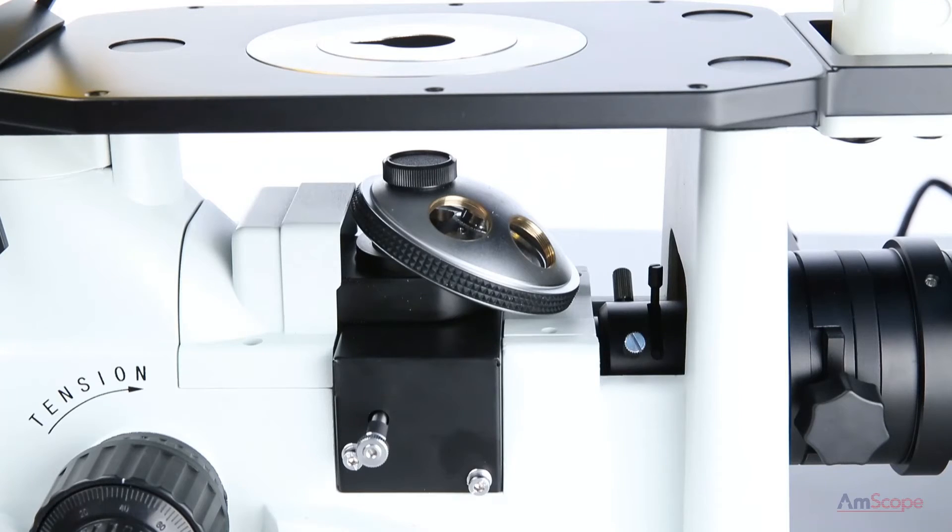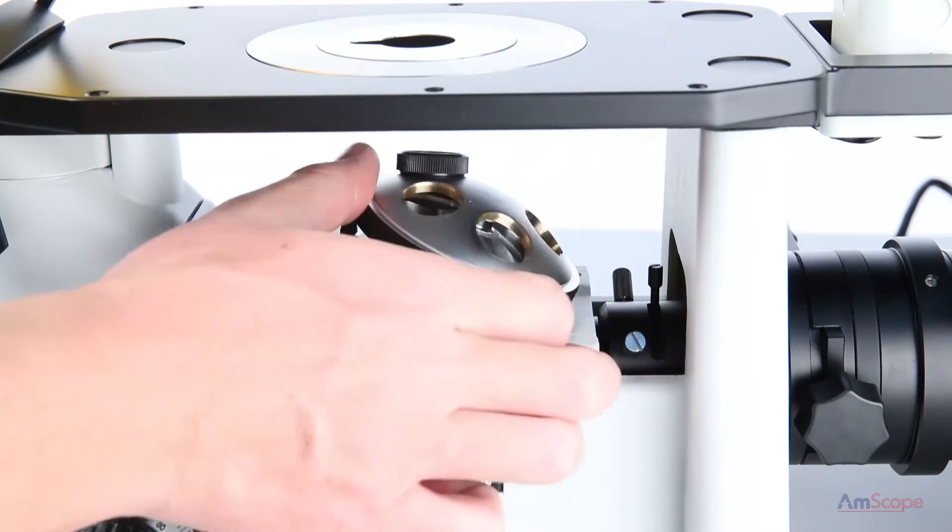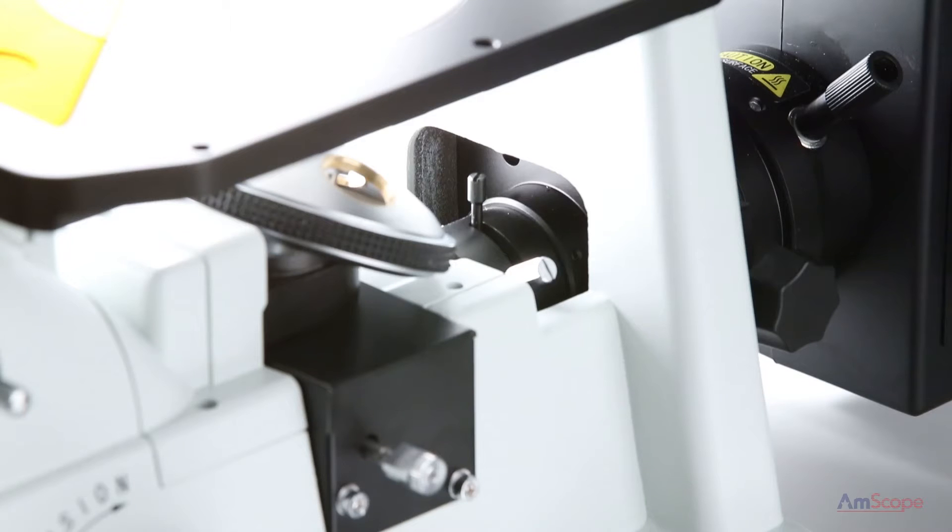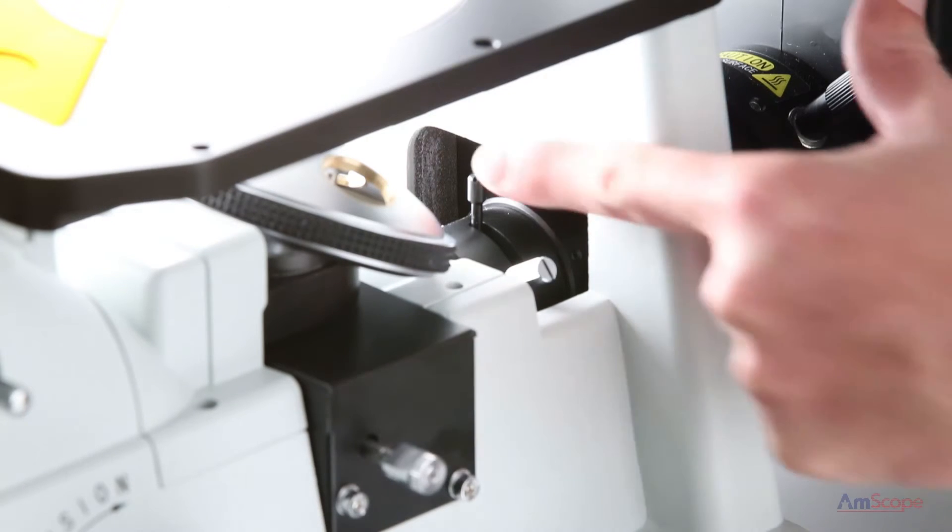Move the nose piece to an empty port. You may have to remove an object to do this. You may also want to open up the illuminator's diaphragm.